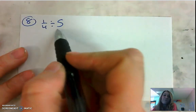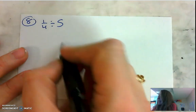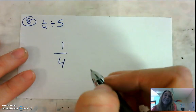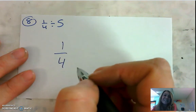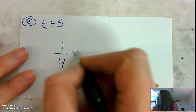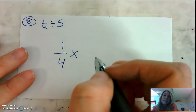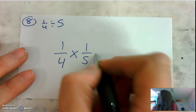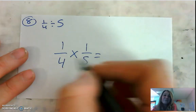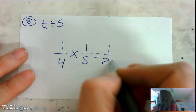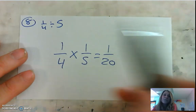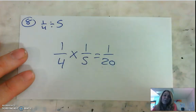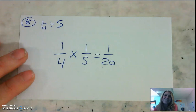The last problem on tonight's homework is another division problem — it's 1 fourth divided by 5. We would sing: keep the first fraction, keep it the same — ain't no reason to alter its name. Change the operation symbol, it says to divide — change it around, multiply this time. Flip the last fraction, flip it around — reciprocal works better, or so I have found. Multiply the numerators, multiply the denominators, simplify if necessary. That's how you multiply fractions. We check it by saying: if I start with a fraction, I end with a fraction — and I do.